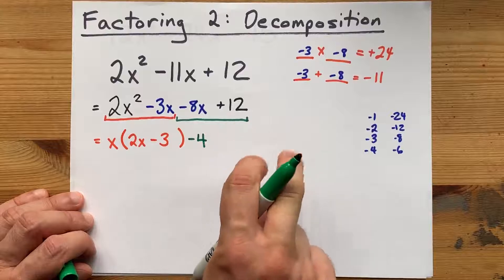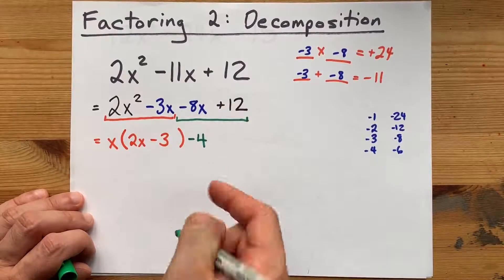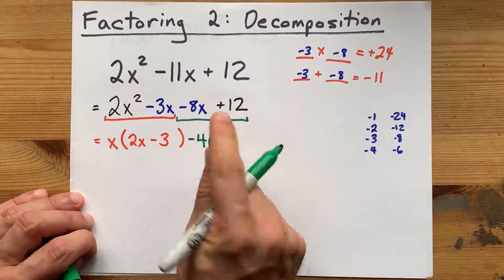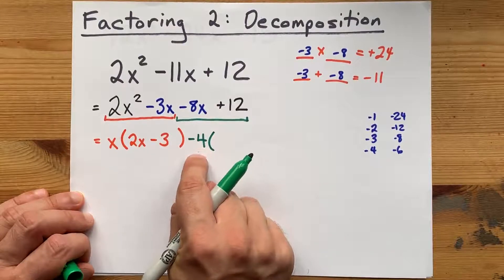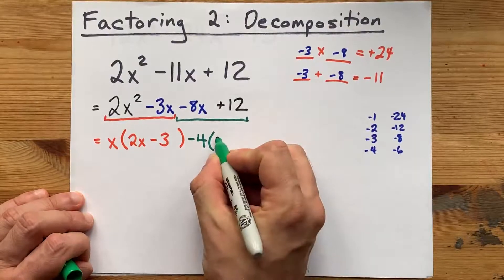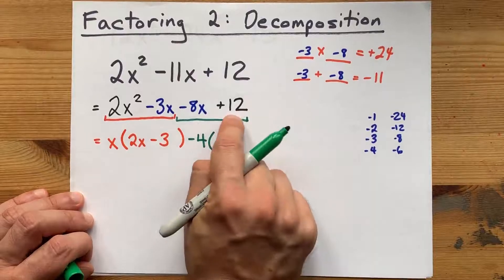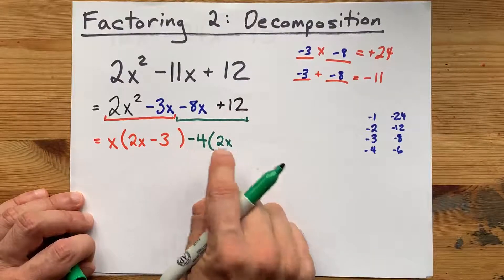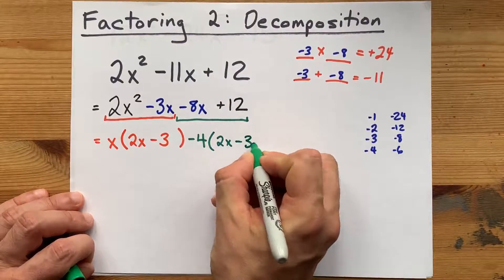That's what I'm going to common factor out of these two terms. How do you do it? Well, negative 8x divided by negative 4 leaves you with positive 2x. And positive 12 divided by negative 4 is negative 3.